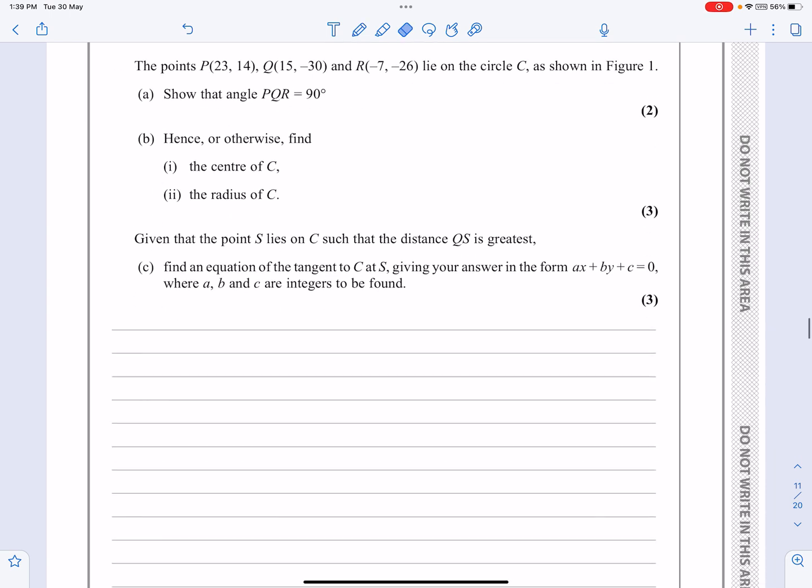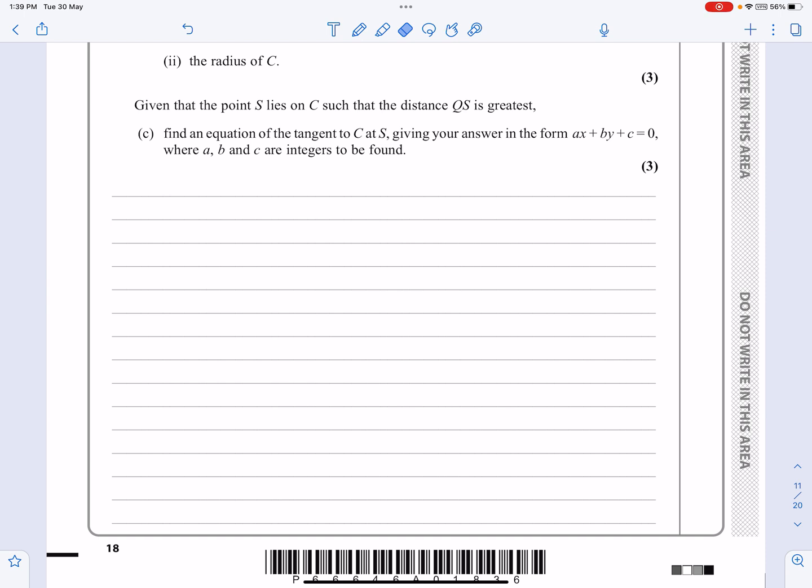It doesn't really matter how you say it, but let's get started with actually doing it. So part A, gradient of PQ first of all. The gradient of PQ, make it clear to the examiner, that's going to be Y2 minus Y1 over X2 minus X1. So in this case, that's going to be 14 minus minus 30, I'm going to put 14 plus 30 over 23 minus 15. And that works out to be 44 over 8, which I'll simplify down to 11 over 2.